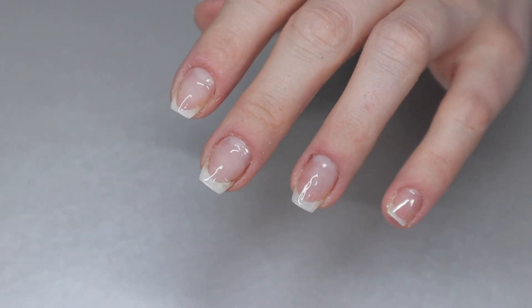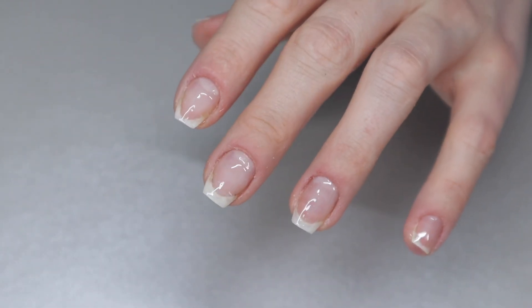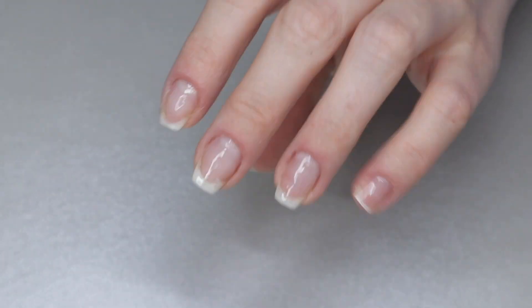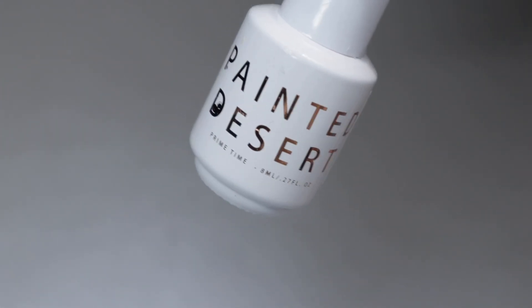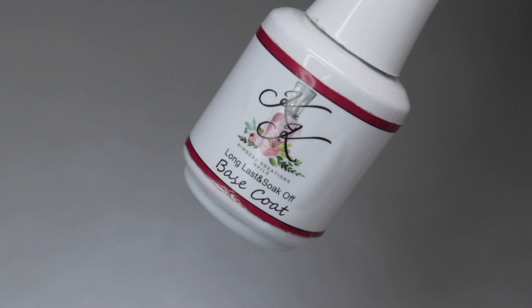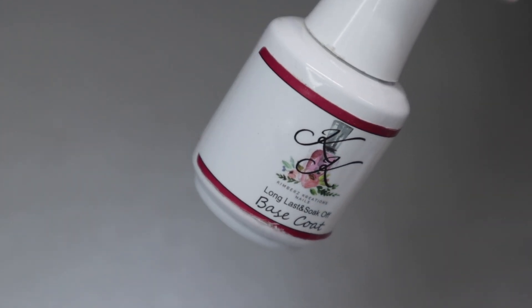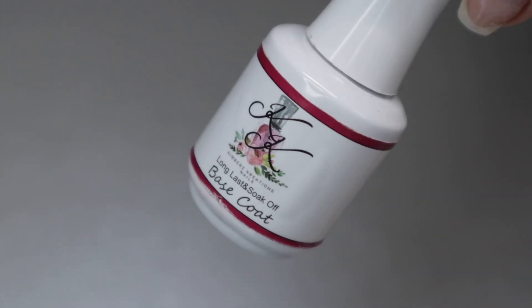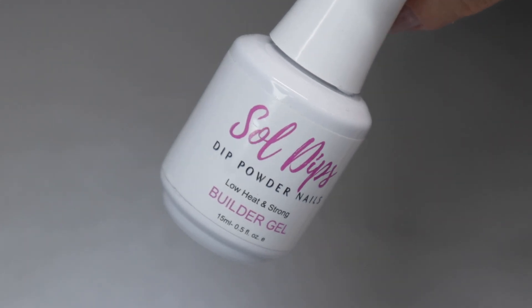To start off this demonstration, my nails are already prepped, meaning I've already applied my primer. This helps ensure that the gel and the jelly tips do not move or lift. Then I applied a gel base coat and cured that for 60 seconds.